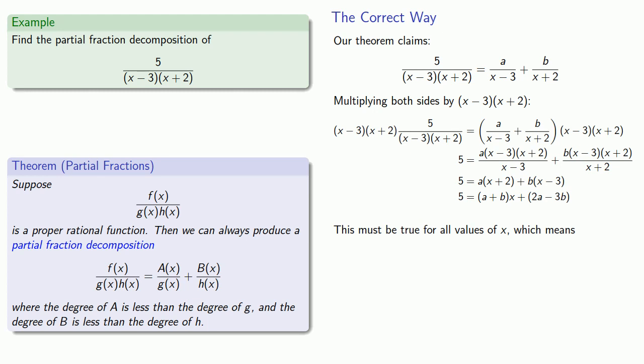So over on the right hand side the coefficient of x is a + b. So I need to make that equal to the coefficient of x on the left hand side which is 0 because over on the left hand side there is no x and so the coefficient must be 0.